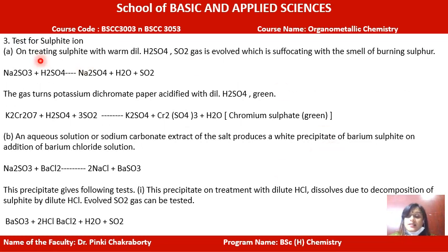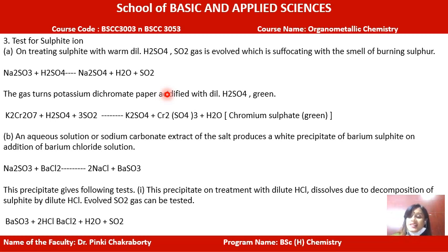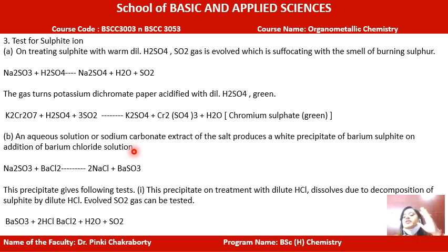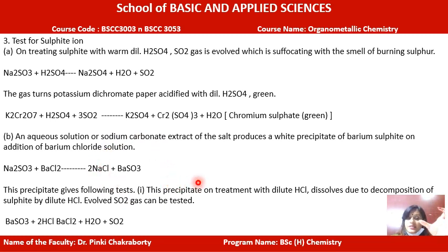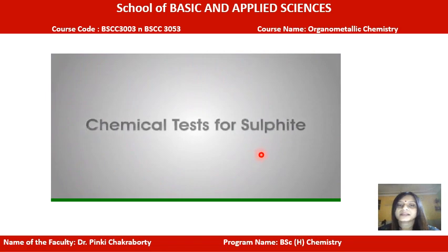For the sulphite confirmatory test: when a salt containing sulphite ion is treated with H2SO4, SO2 gas with a suffocating smell is liberated. To further confirm SO2, dropwise addition of potassium dichromate to the solution leads to the formation of chromium sulphate, which is green in colour. Another test: if the salt is soluble, use the water extract; if not, prepare sodium carbonate extract. Adding barium chloride solution gives white barium sulphite precipitate, which disappears on addition of dilute HCl, liberating SO2 gas.